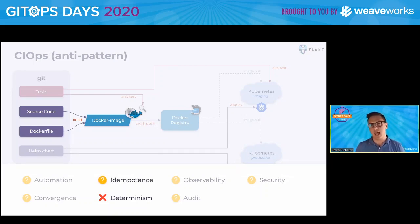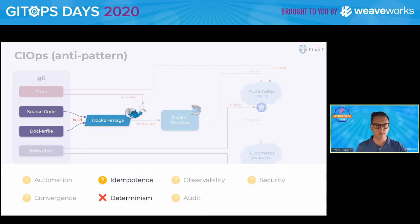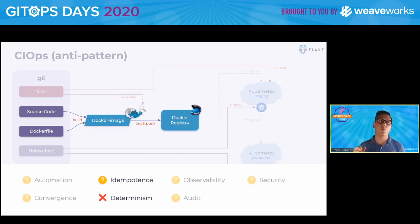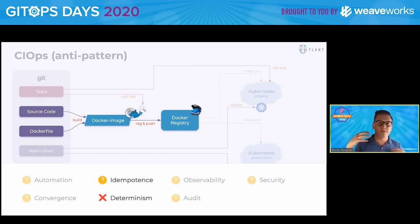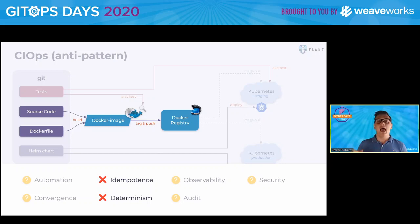The same goes with idempotency. Builds are not idempotent because there is no guarantee that after some time some dependency will not be abandoned or broken, and the rebuild will just fail as a result. The other problem lies in the tagging stage when we tag Docker images, because sometimes we use CI job IDs to tag Docker images, sometimes we use some information from Git, but there is no fundamental guarantee of idempotency — that for the same content in Git, we will have the same tag and the same image.